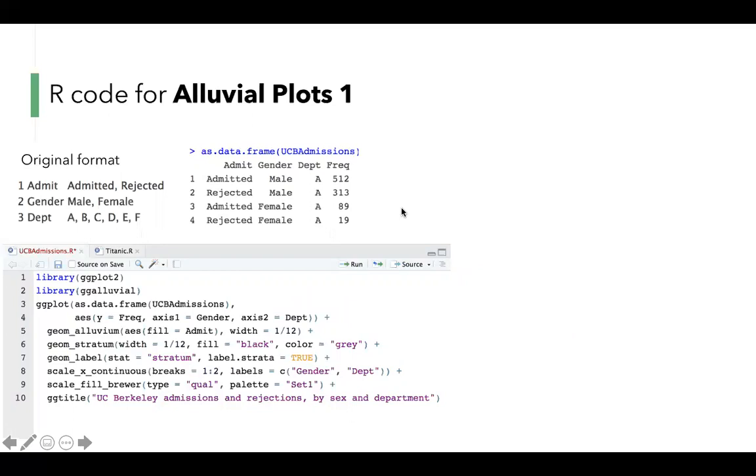The variables and their levels are as follows. Then, we can use the function as.data.frame to transform the original format into a frequency table, and a new column will show up like this.